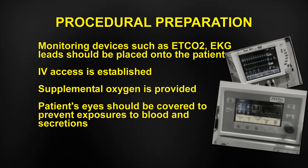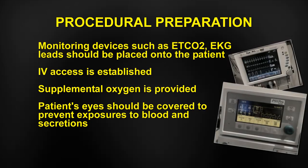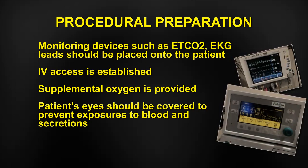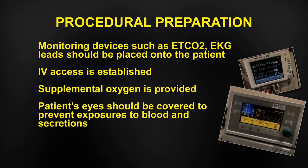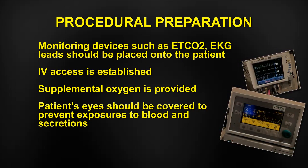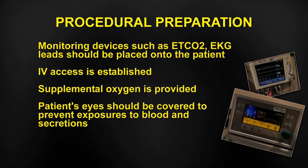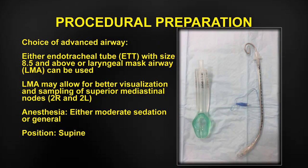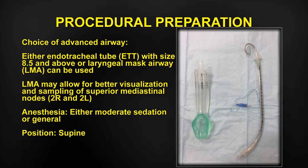Procedural preparation should ensure the availability of monitoring devices such as end-tidal CO2 and EKG leads, which should be placed onto the patient for telemetry monitoring. Intravenous access should be established and supplemental oxygen provided. The patient's eyes should be covered to prevent exposure to blood and secretions. The EBUS scope should have a disposable latex balloon attached to the ultrasound probe. Options for advanced airway include a size 8.5 or above endotracheal tube or a laryngeal mask airway (LMA), which may allow for better visualization and sampling of the superior mediastinal lymph nodes. Either moderate sedation or general anesthesia should be provided, and the patient should be placed in the supine position.